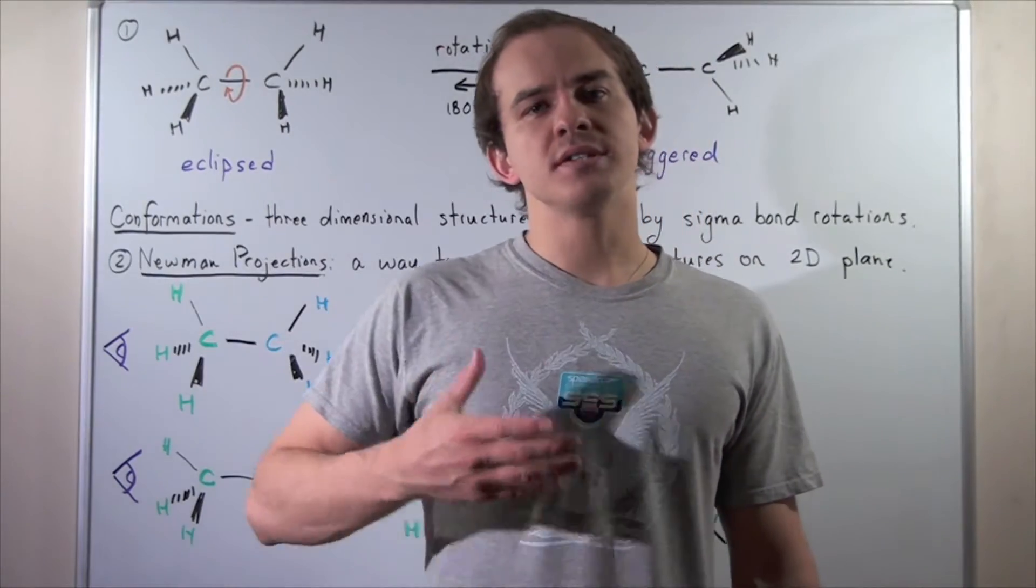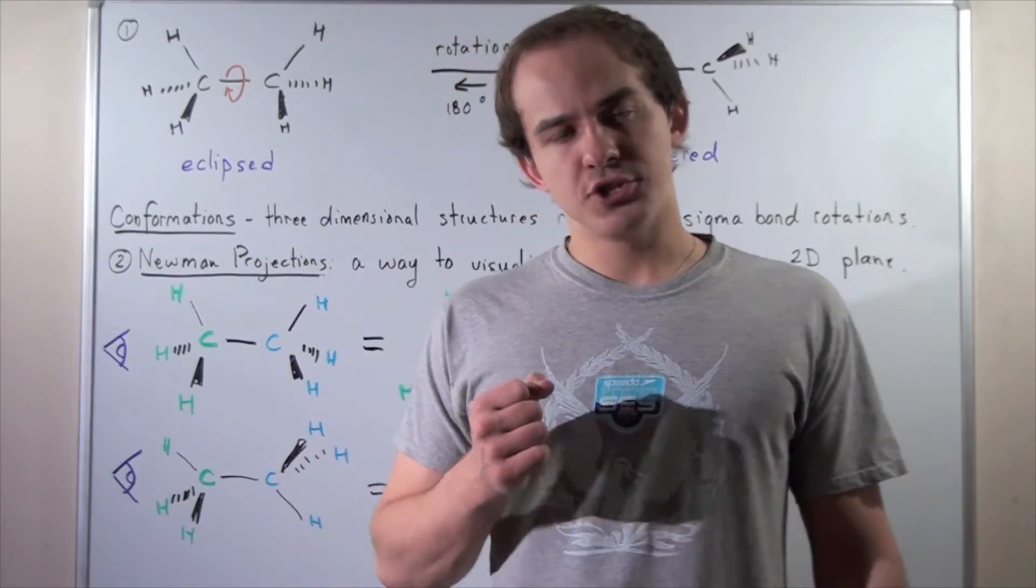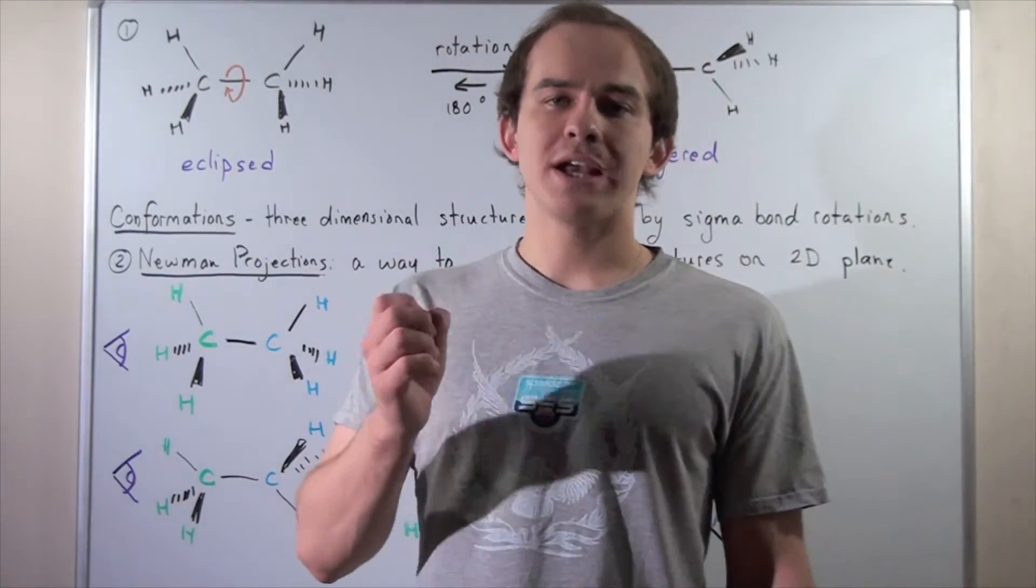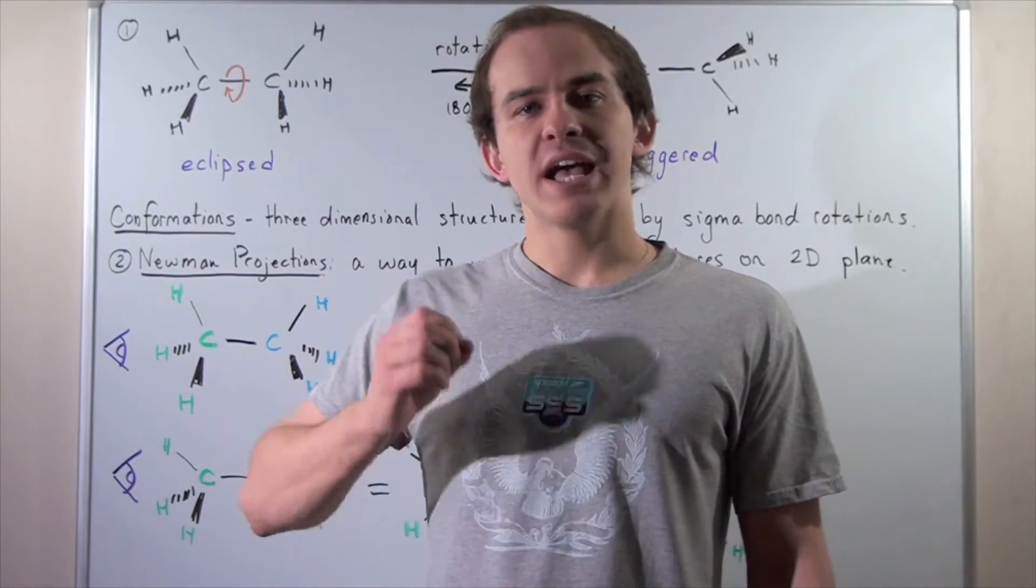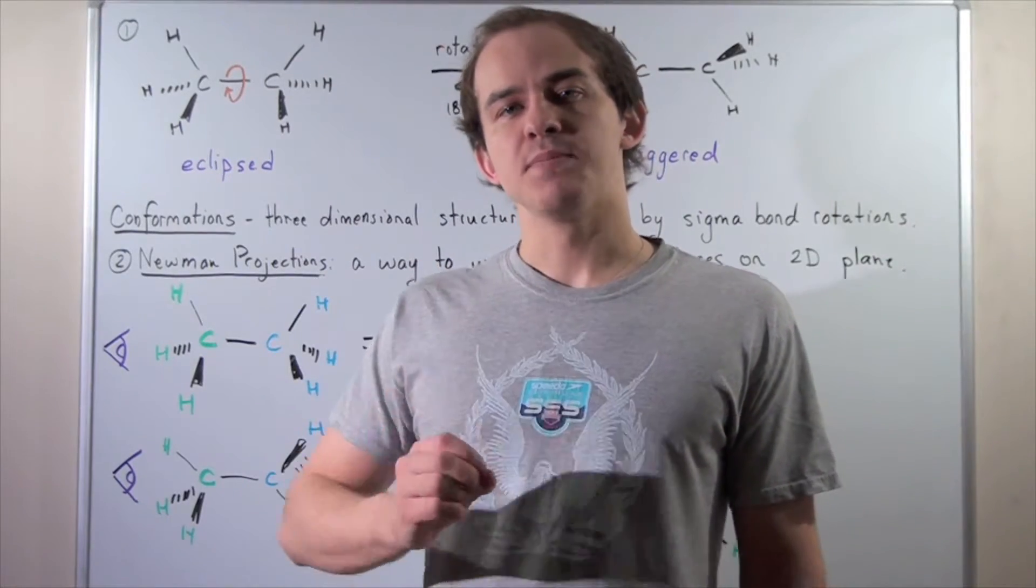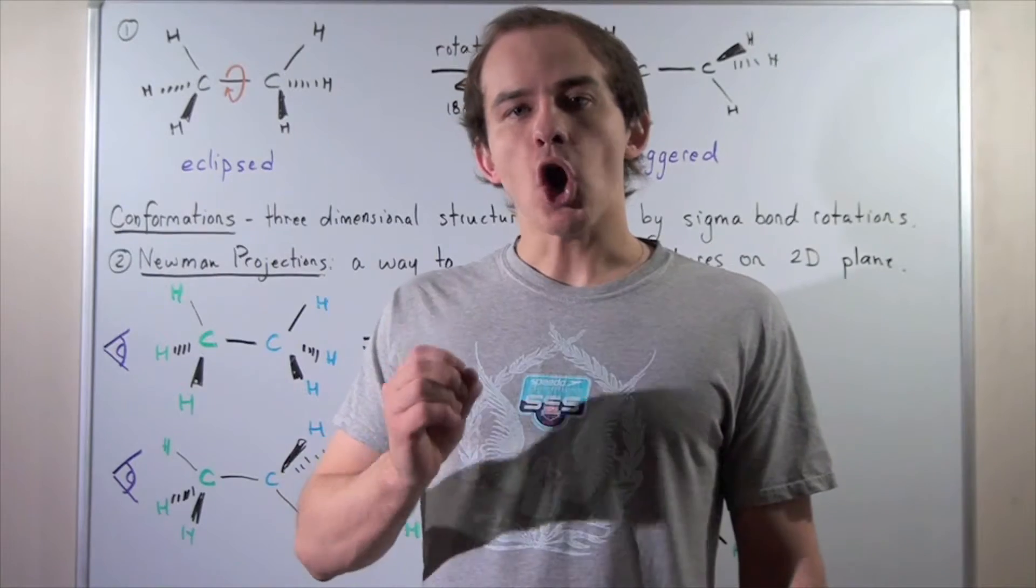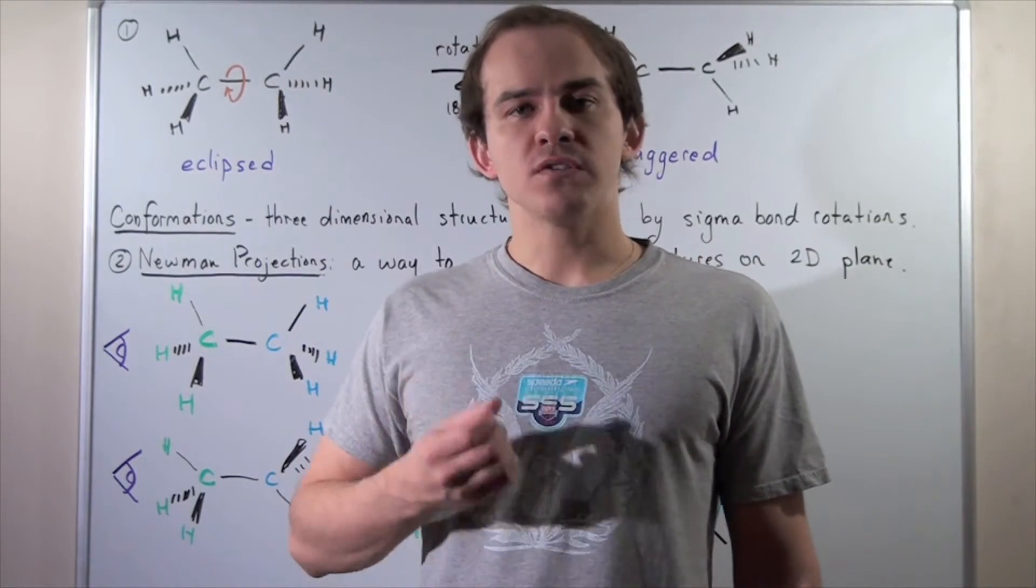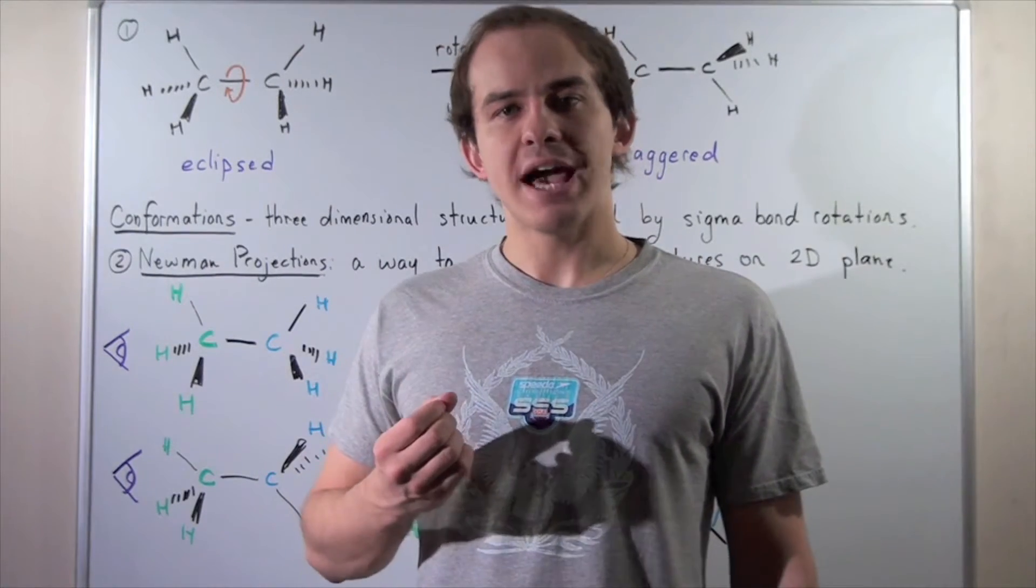In this lecture, we're going to discuss structural conformations as well as Newman projections. We're going to use the ethane molecule as an example. Ethane is a two-carbon alkane, so it's composed of two carbons and six hydrogen atoms.